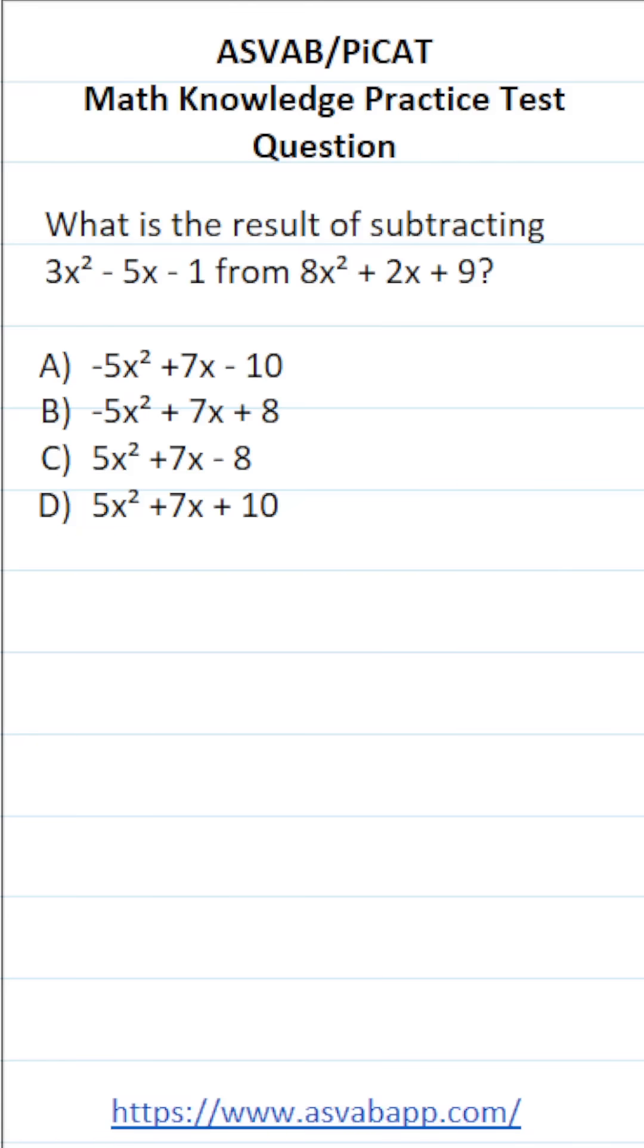This math knowledge practice test question for the ASVAB and PiCAT says, what is the result of subtracting 3x squared minus 5x minus 1 from 8x squared plus 2x plus 9? We're subtracting this polynomial from this polynomial, and the way we set it up is like this.